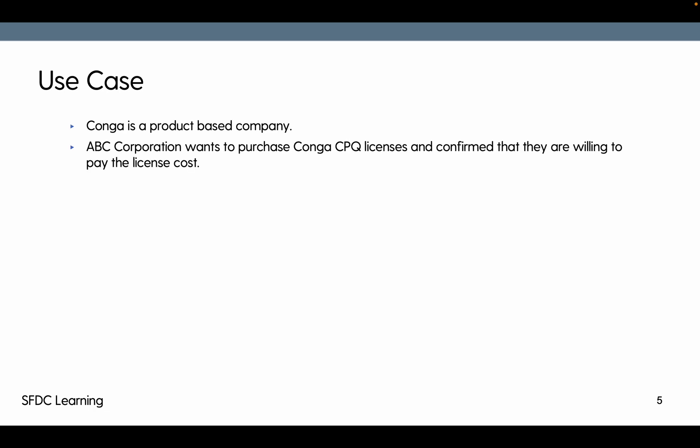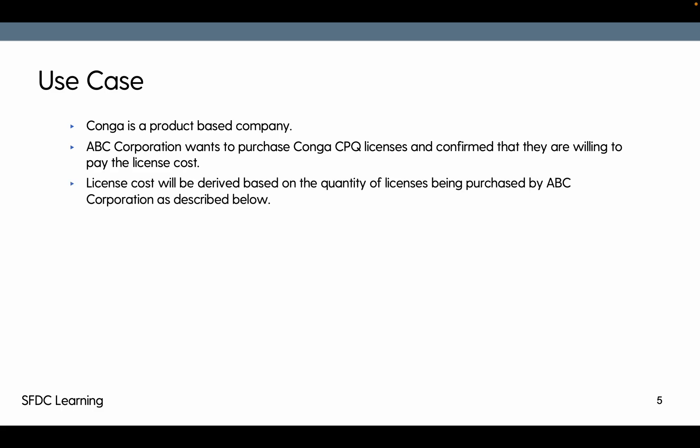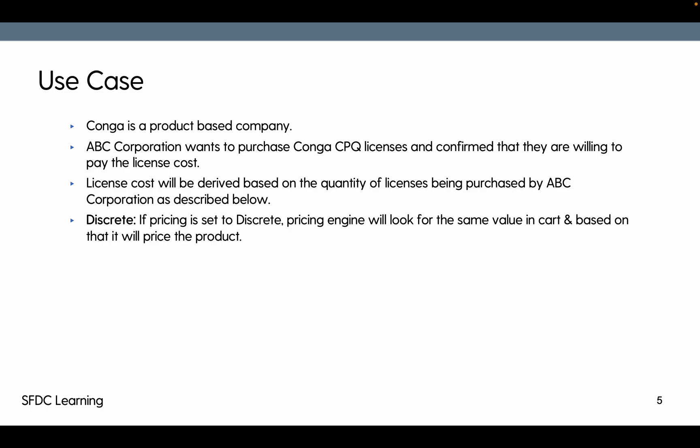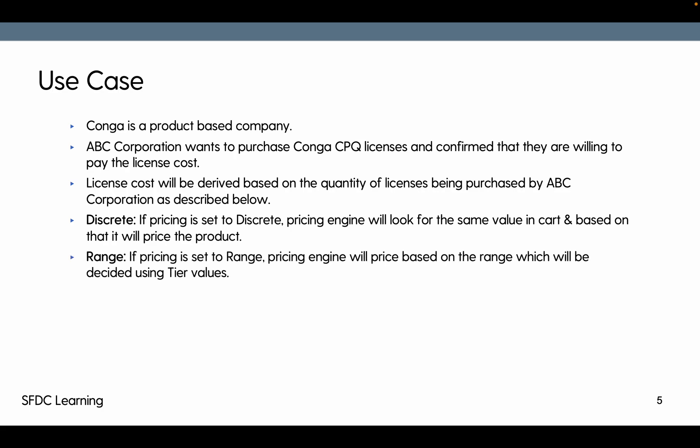Let's see the use case. Conga is a product-based company — I believe everyone knows that. ABC Corporation wants to purchase Conga CPQ licenses and confirms they are willing to pay the license cost. The license cost will be derived based on the quantity of licenses being purchased by ABC Corporation.